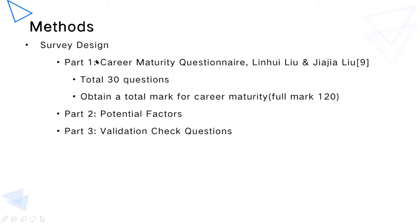The questionnaire is divided into three parts. The first part is a career maturity questionnaire developed by Ling Hui Liu and Jia Jia Liu, used in their research paper and a number of other studies on career maturity. We consider this a valid questionnaire. This part of the survey has a total of 30 questions, and after completing this part, participants obtain a total mark for their career maturity out of a full mark of 120.